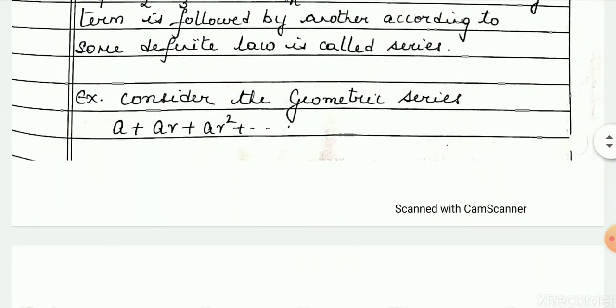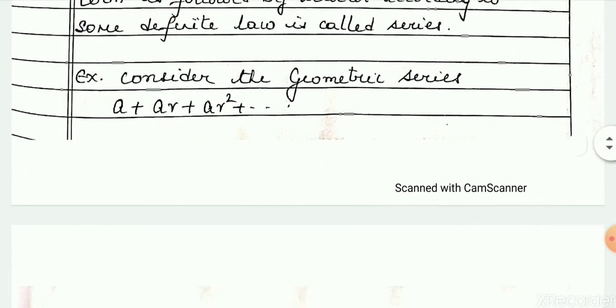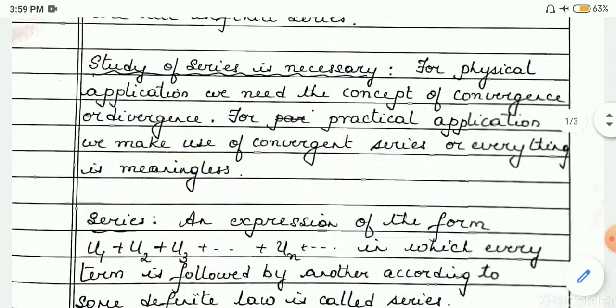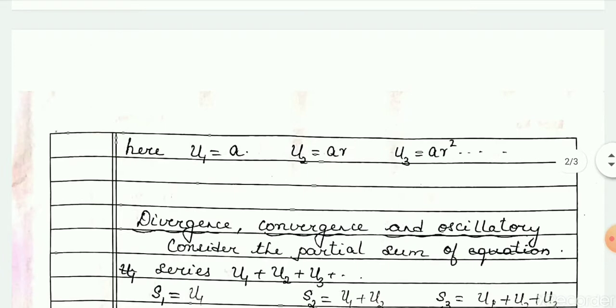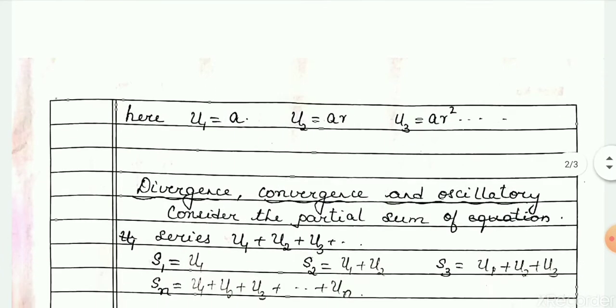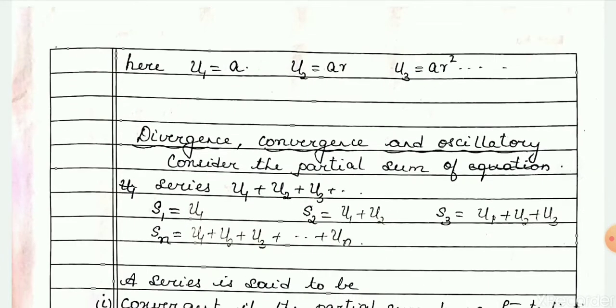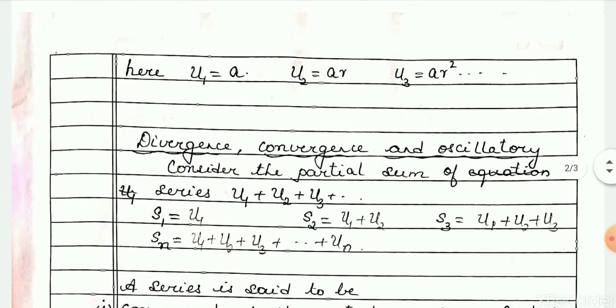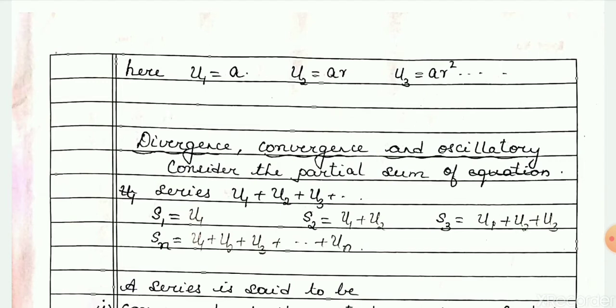One of the standard forms you will have studied is the geometric series, which is given as: a plus ar plus ar squared plus and so on. The first term is u1 equal to a, the second term is u2 equal to ar, the third term is u3 equal to ar squared, and so on.